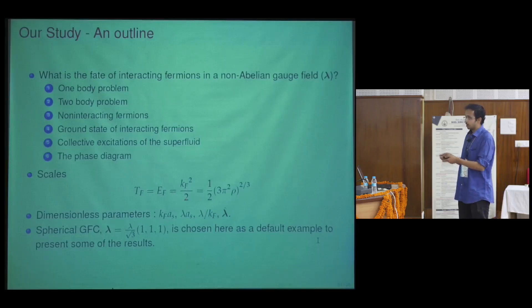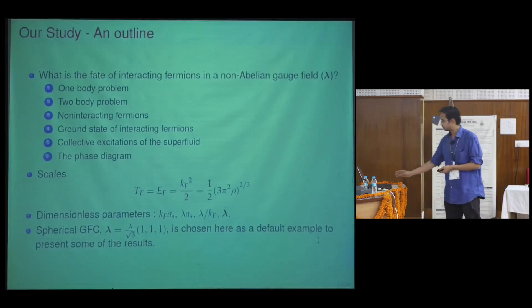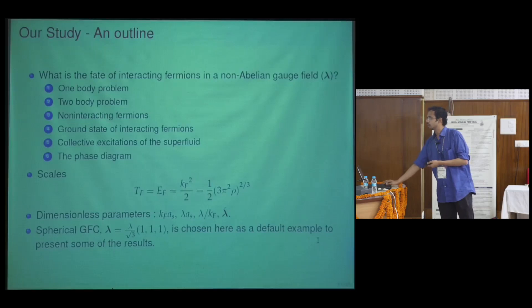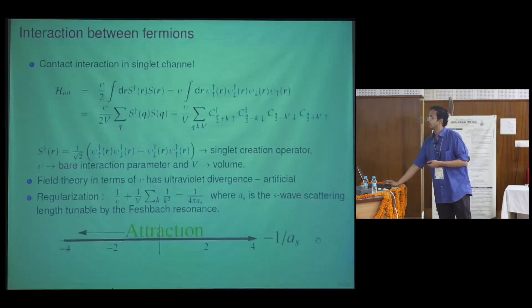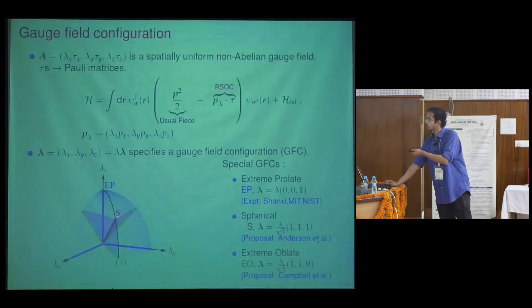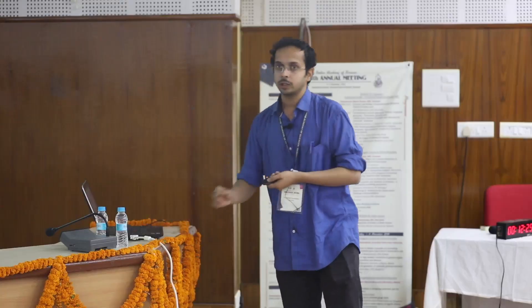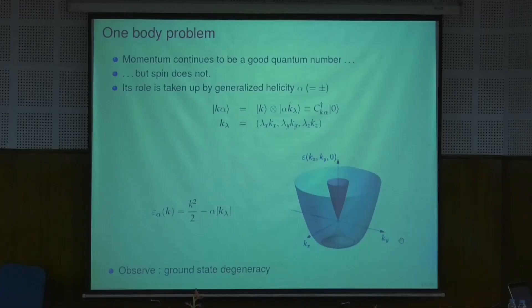One thing to note is that we work in units where the mass of the fermions, Boltzmann's constant, and Planck's constant are unity. For simplicity, I will focus on the symmetric coupling where lambda_x = lambda_y = lambda_z. In the one-body problem, the main outcome is that while momentum is a good quantum number, spin is not. Its role is taken by helicity, giving plus and minus helicity bands. The plus helicity band has many degenerate states, which plays a very interesting role.